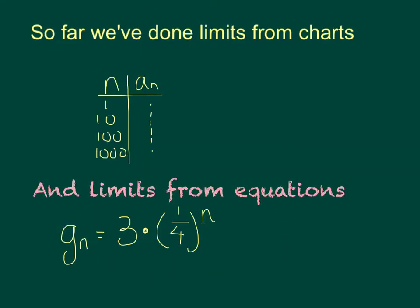So far, we've studied the limit of a sequence from a chart by plugging in bigger and bigger numbers for n in whatever equation we have. And we've also looked at limits from just the equation using certain tricks, such as in this particular equation, we would observe that it's geometric because of the exponent. The base is less than 1, so the limit would have been 0.